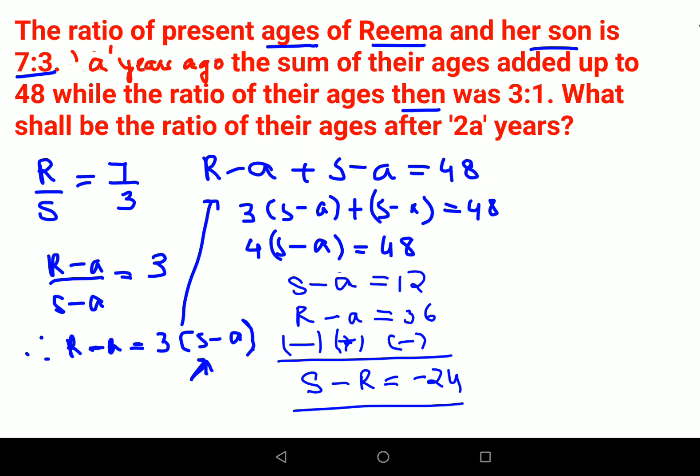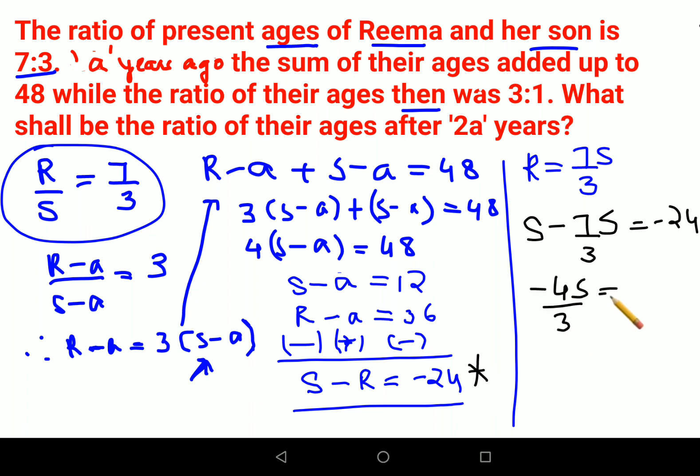So now let's put the value of R. From here I can say that R is nothing but 7 upon 3 times S. So let's put it over here in this equation. So I have S minus 7 upon 3 times S equals to minus 24. So taking the LCM, you have minus 4S upon 3 equals to minus 24. Therefore, this and this will cancel and you will have value of S coming out to be 18.